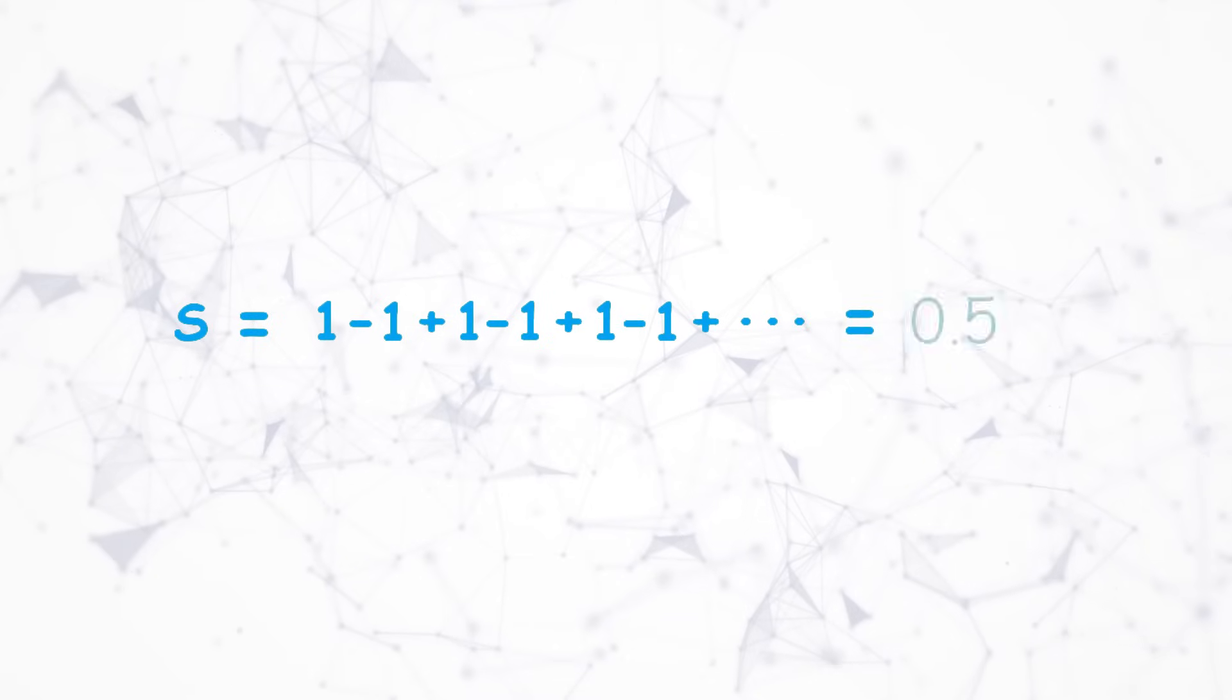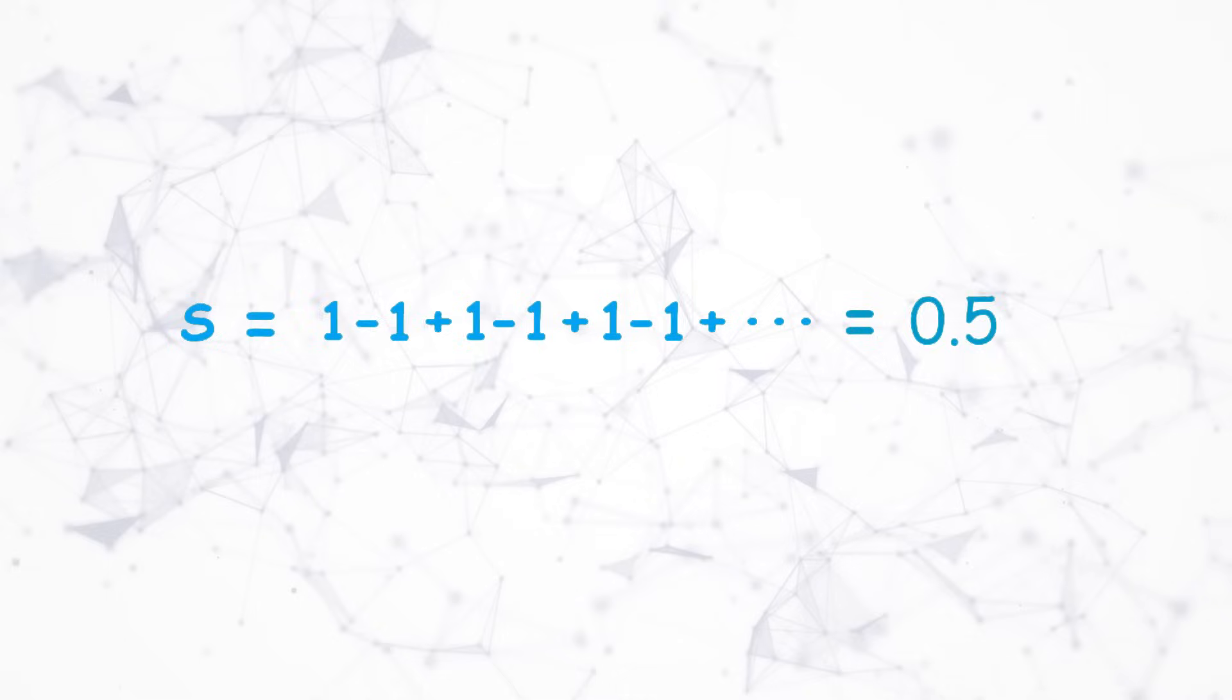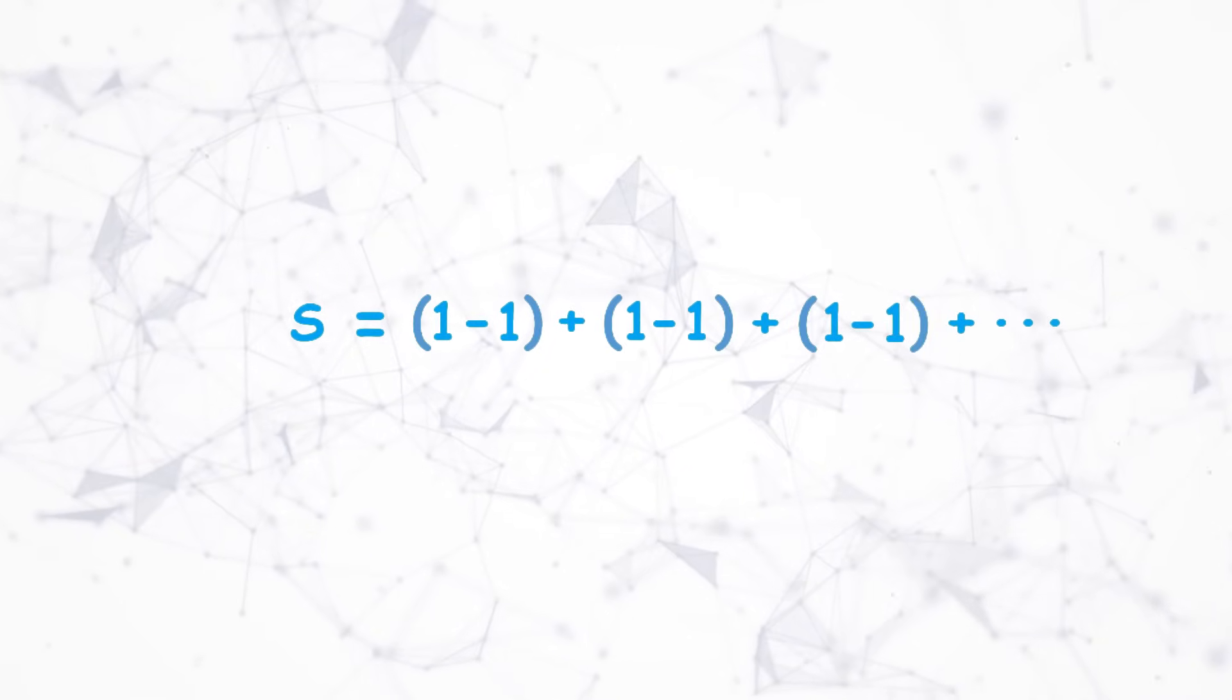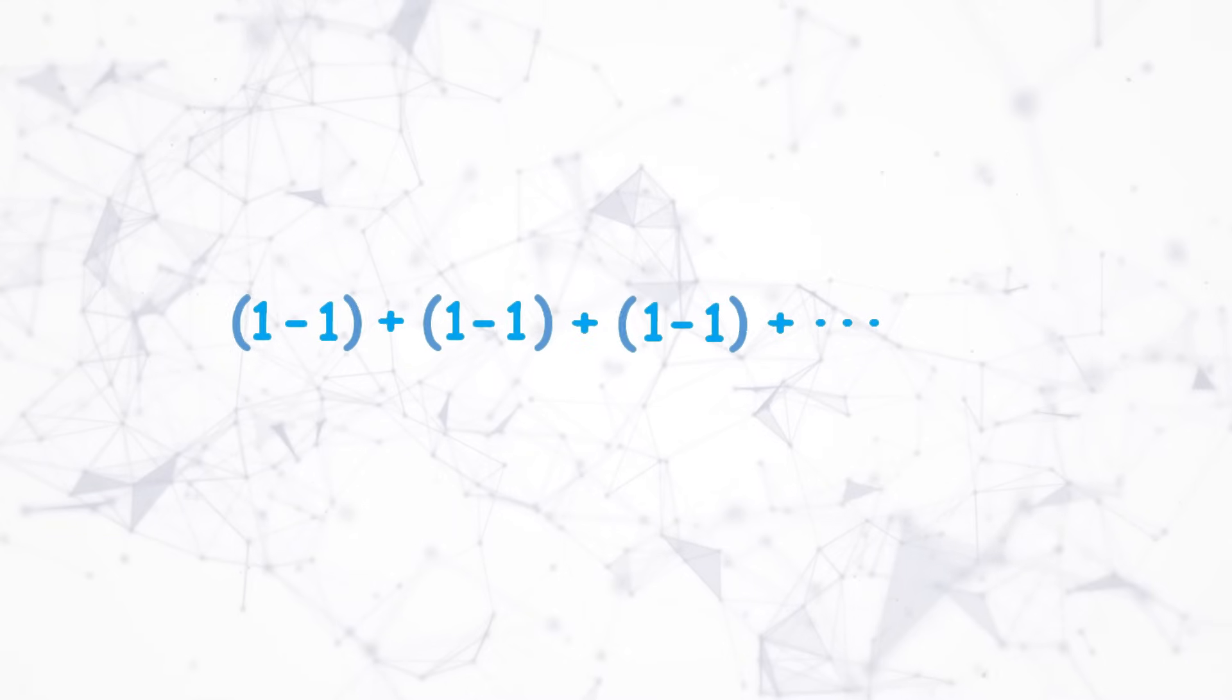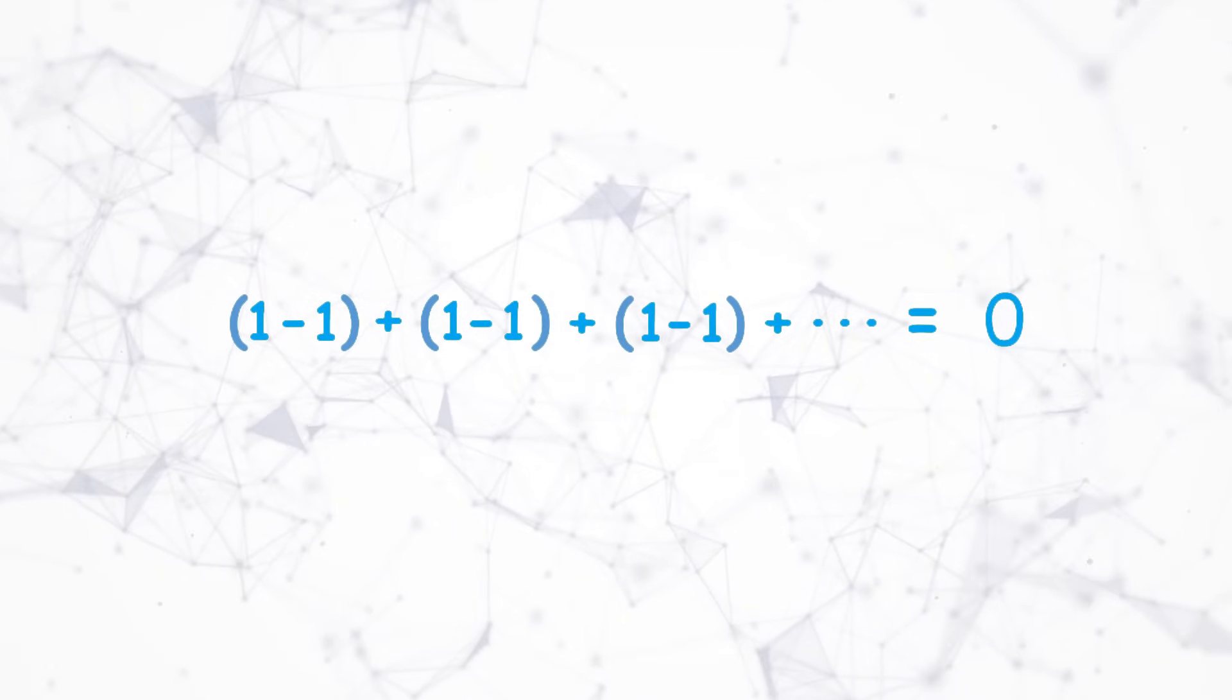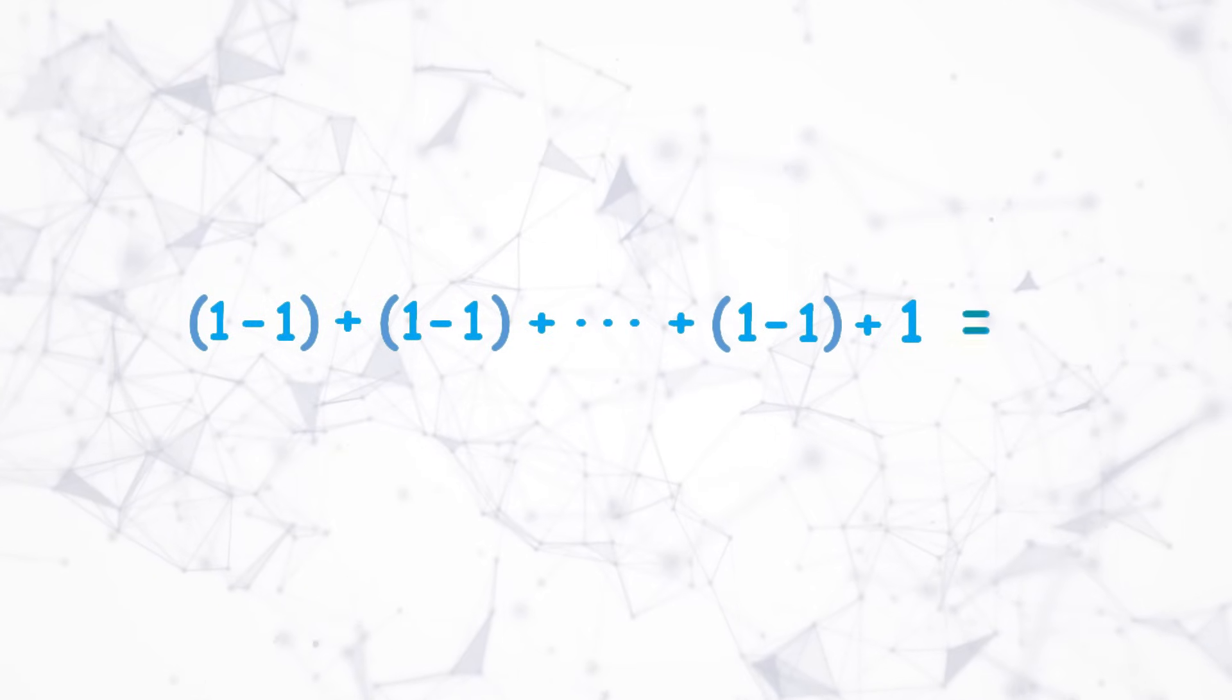One of the most insane ways a problem is solved in maths is the Grande series, and the problem has its own insanity as well. If we arrange this problem in the best possible way, we can say there are either an even number of ones and the solution is 0, or there are an odd number of ones and the solution is 1.